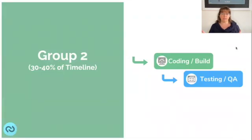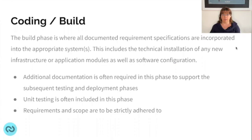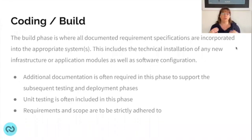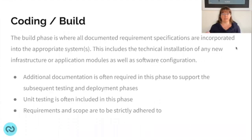Group two typically contains the bulk of activity — around 30 to 40% of the total project — and includes the coding and build phase as well as testing and QA rounds. The build phase follows sign-off of design documents, where specification documents are incorporated into the appropriate system or technical environment. This includes installing new infrastructure, application modules, and all software configuration — essentially anything requiring hands-on keyboard effort. Additional documentation occurs throughout this phase to support subsequent testing and deployment, and some unit testing is also typically included. It's critical to stick to the requirements and scope during this phase.